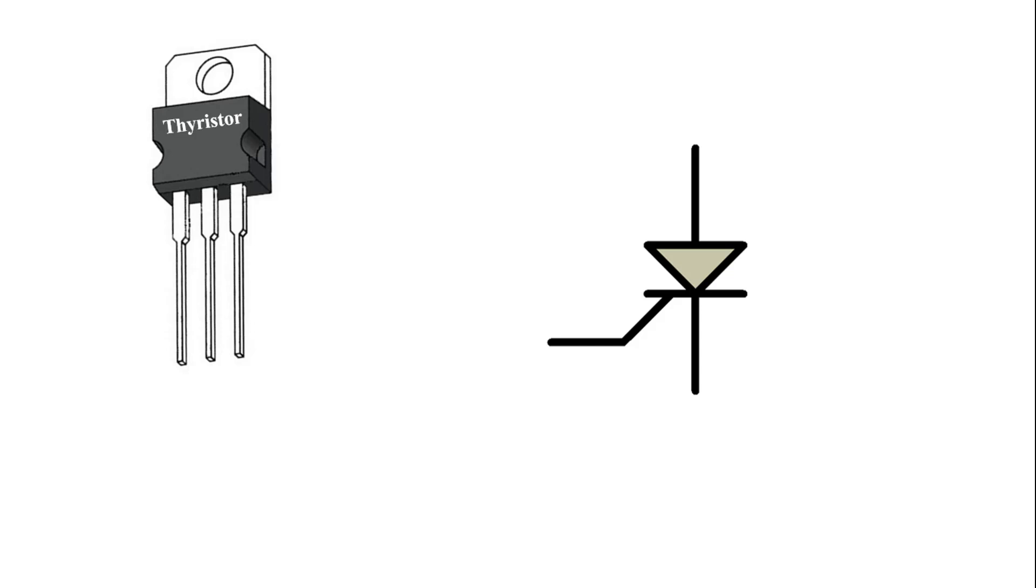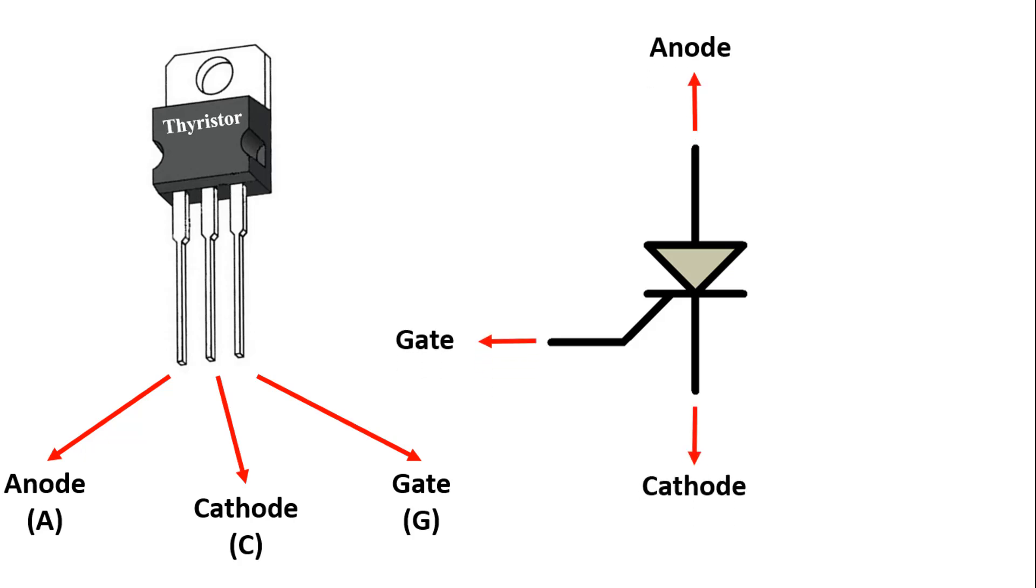You see the shape of a thyristor on the left and the symbol on the right. Thyristors have three pins: one is anode, the other is cathode, and the last one is gate. Their order is not always the same; their location may change. They are denoted by the abbreviations A, C and G. In its symbol, anode, cathode and gate pins are like this.